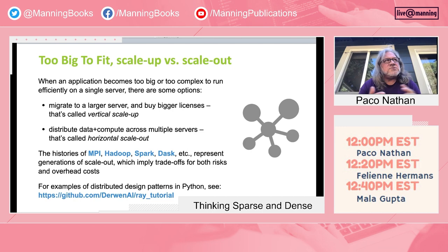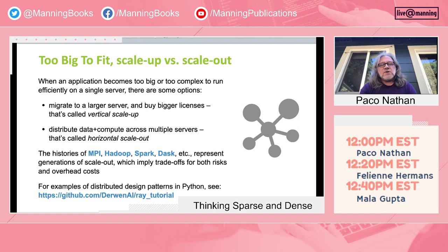They're looking at the co-evolution of hardware and software together. When your application is too big or complex to run on your laptop or a single server, you have a couple of choices: you can scale up — get a bigger server, buy bigger licenses — or you can scale out, meaning you distribute the data and compute across multiple servers with some trade-offs. Scale-out always implies overhead costs and risks.